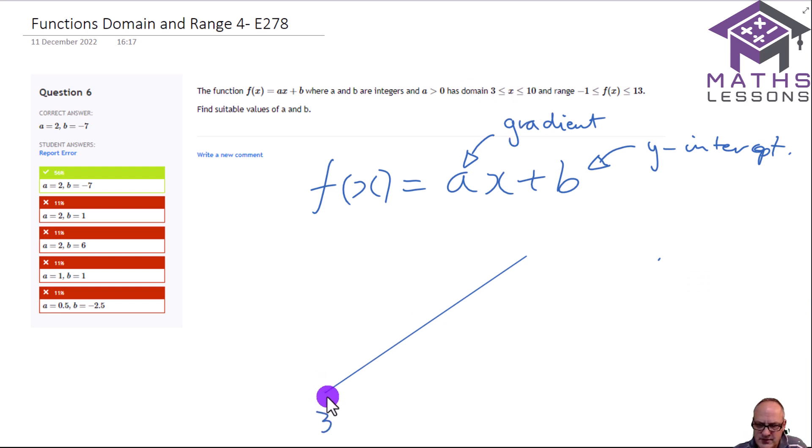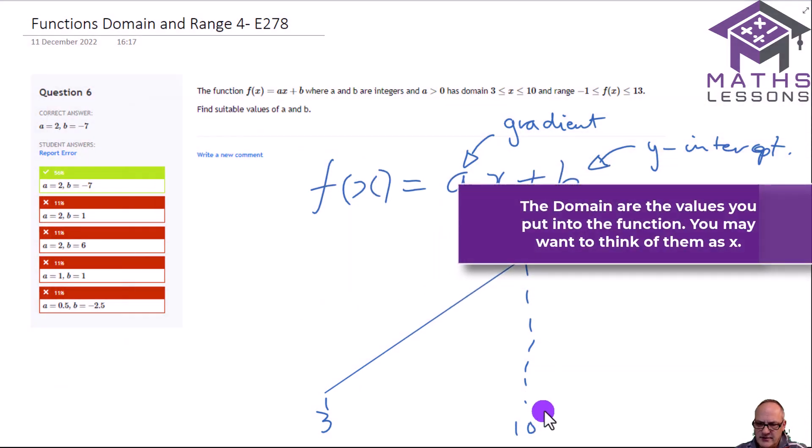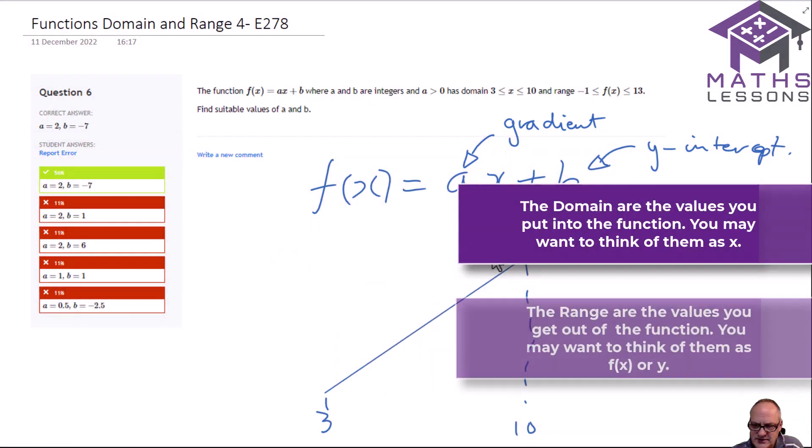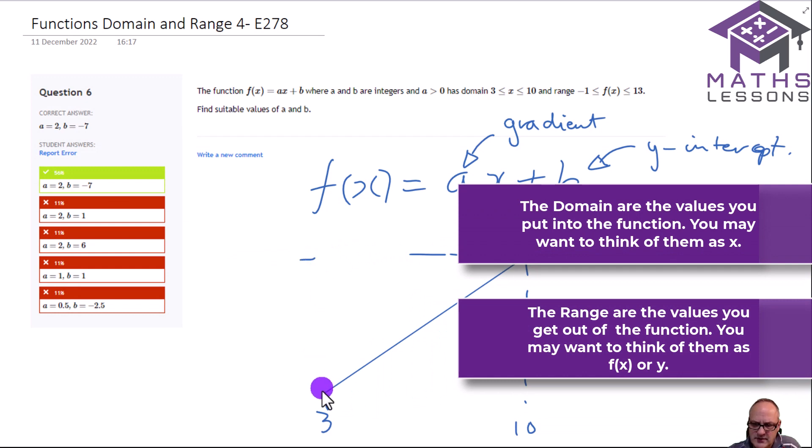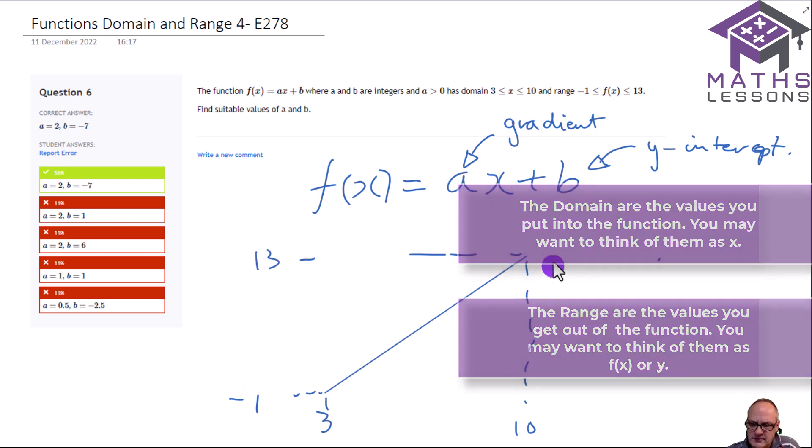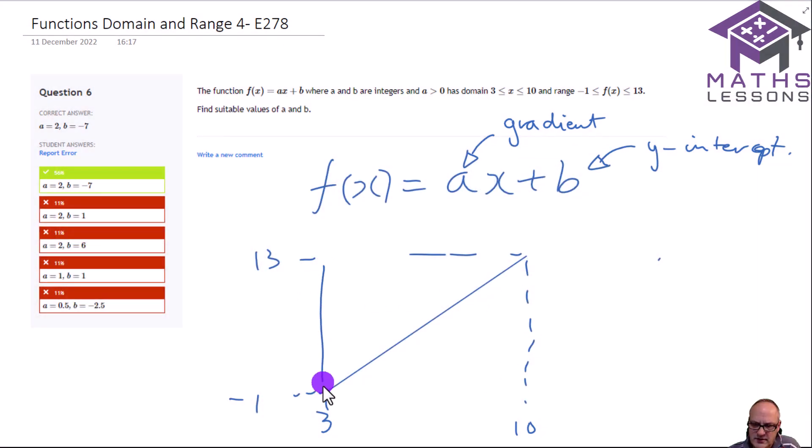So the domain goes from 3 all the way up to 10. Remember, these are the values you'd put in. The range, the values you get out if you're going to do on the y-axis, goes from minus 1 to 13. So we can see that the change in y here is going to be 14, and we can see the change in x here is going to be 7.